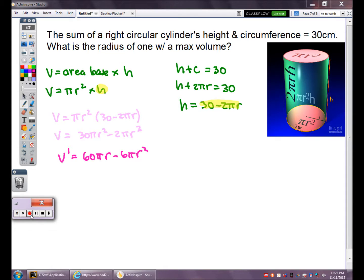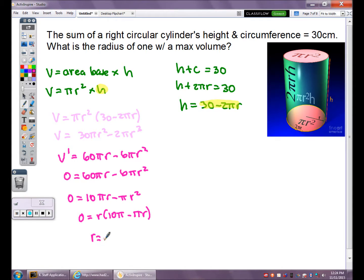I'm going to find the derivative of volume and set it equal to zero. V prime is 60 pi r minus 6 pi r squared, set it equal to zero. Divide out the greatest common factor between 60 and 6. Reduce that to 10 pi r minus pi r squared. Factor out the r, set each factor equal to zero. r equals zero, and r equals 10 over pi.